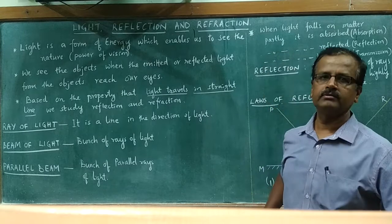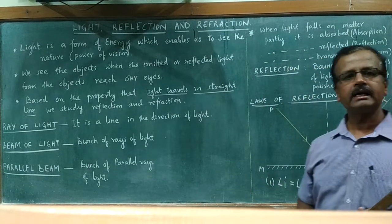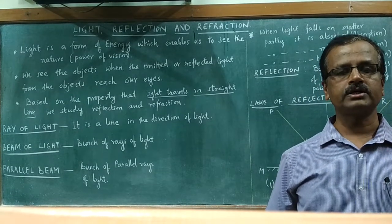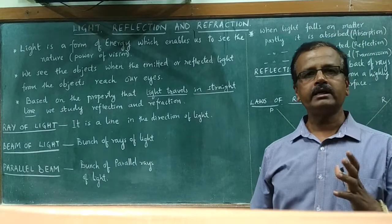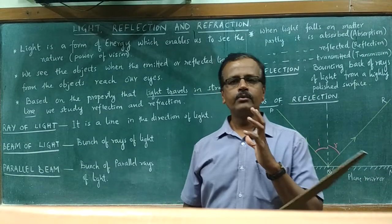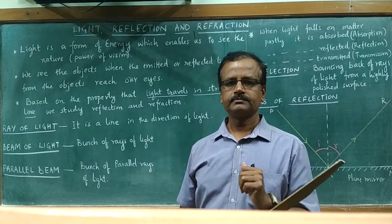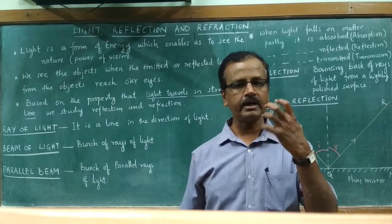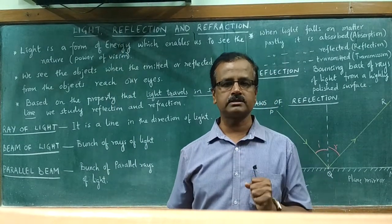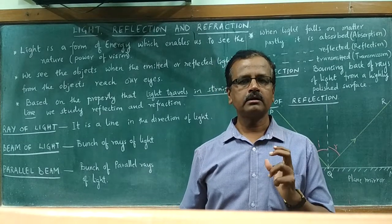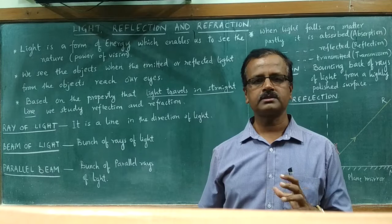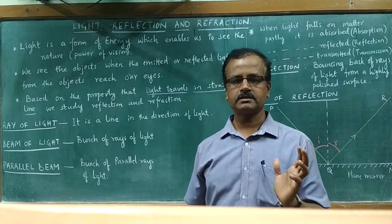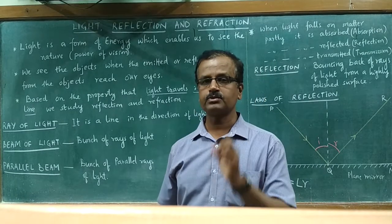So first of all, what is light? Light is a form of energy which enables us to see the nature around us. Light empowers the ability of vision — it gives us the power of vision with the help of our eyes. Eyes are also very important organs; they are the God's gift for all of us, wonderful organs which help us to see the things around us. To see the things around us, we need light.